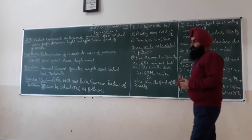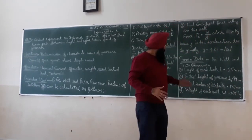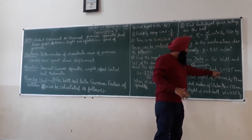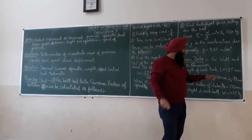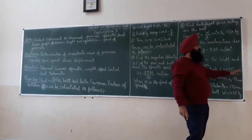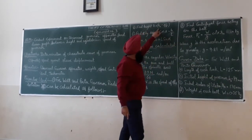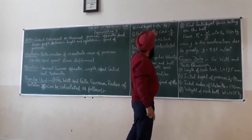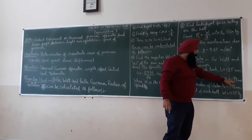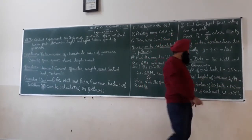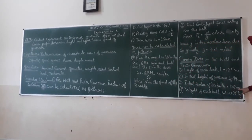The given data for the experimental setup: the length of the links for the Watt governor and the Porter governor are both the same, equal to 125 mm. The initial height of the Watt governor equals 94 mm. The initial radius of rotation equals 136 mm. And the weight of each ball equals 0.35 kg.